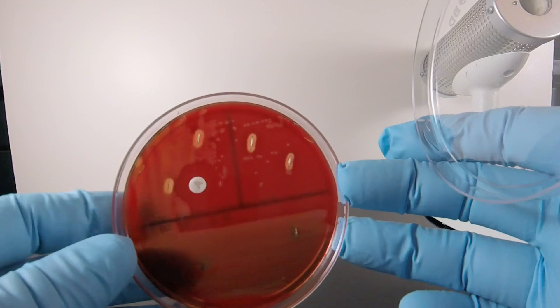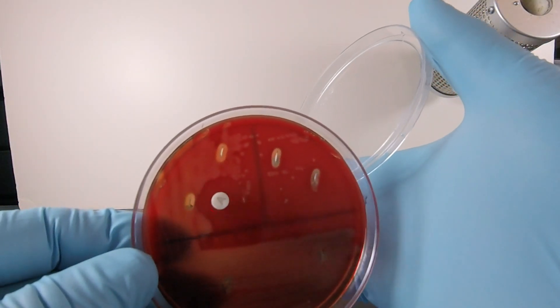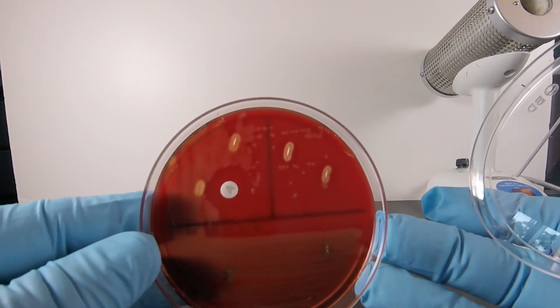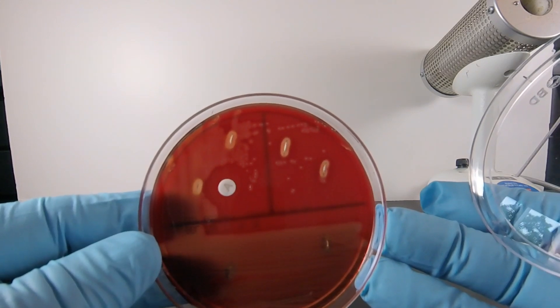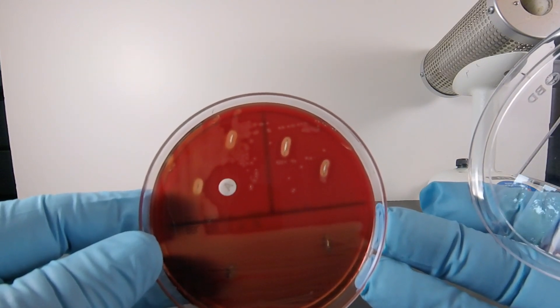You also see a nice zone of inhibition around the Taxo A disk, where there's no bacteria growing because it's sensitive to the bacitracin in the A disk.